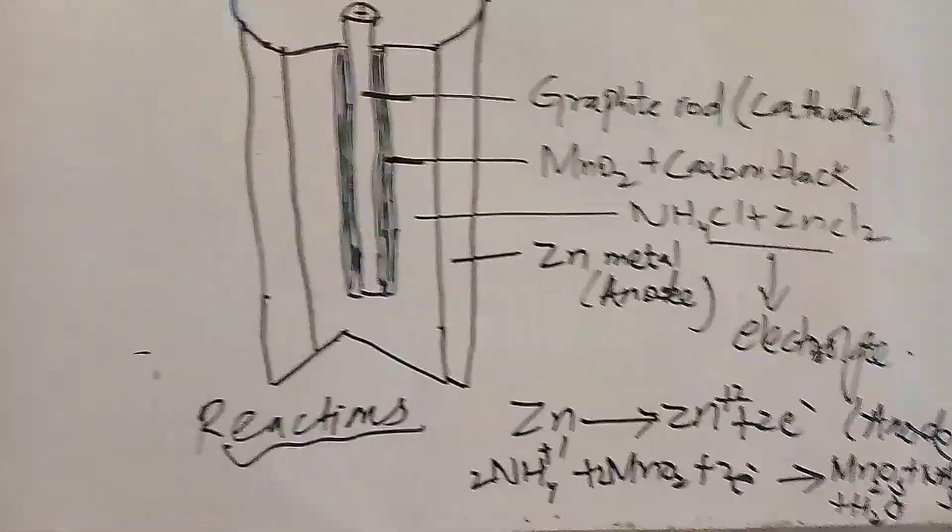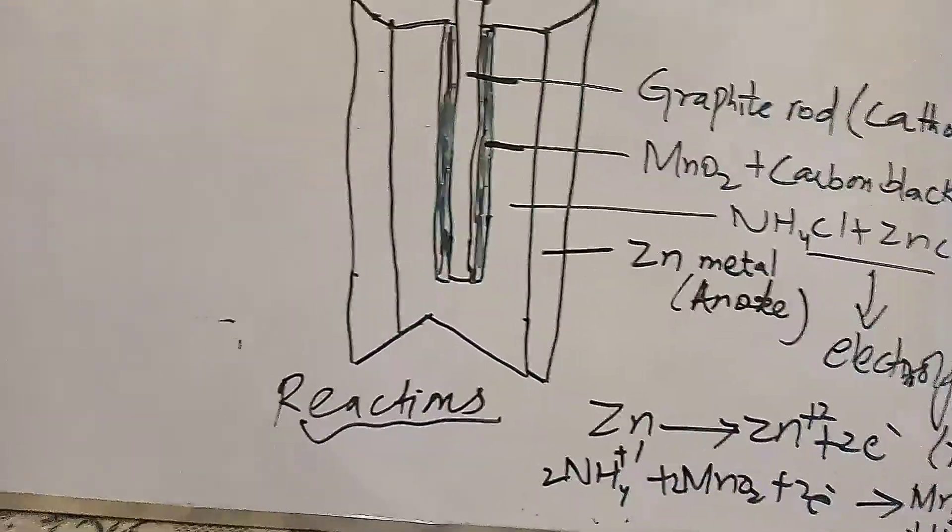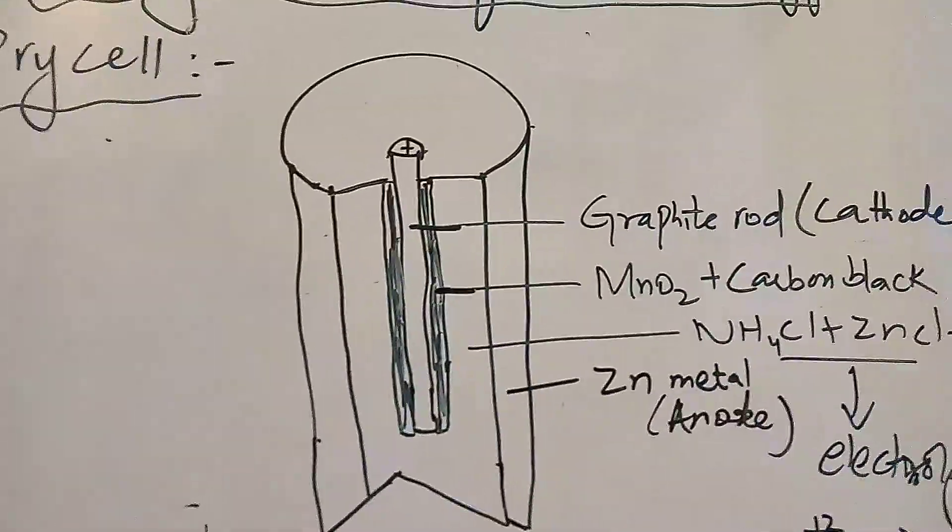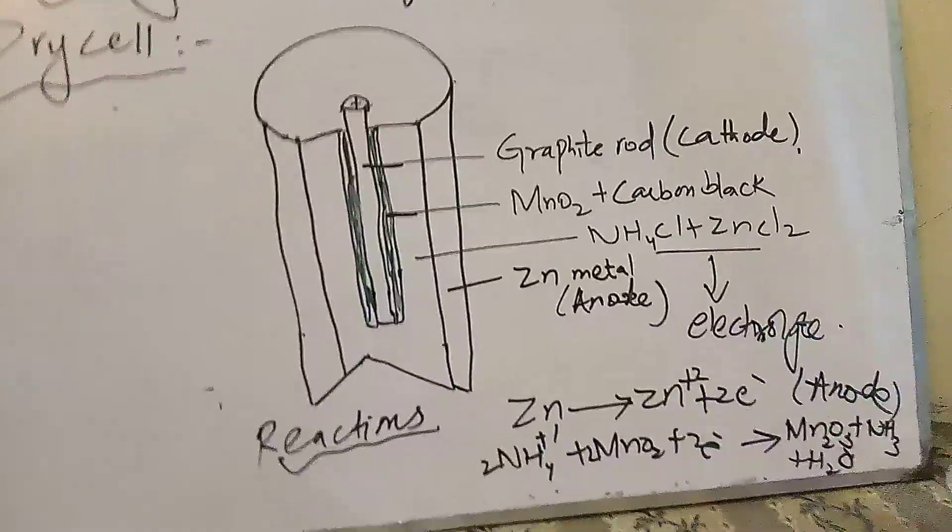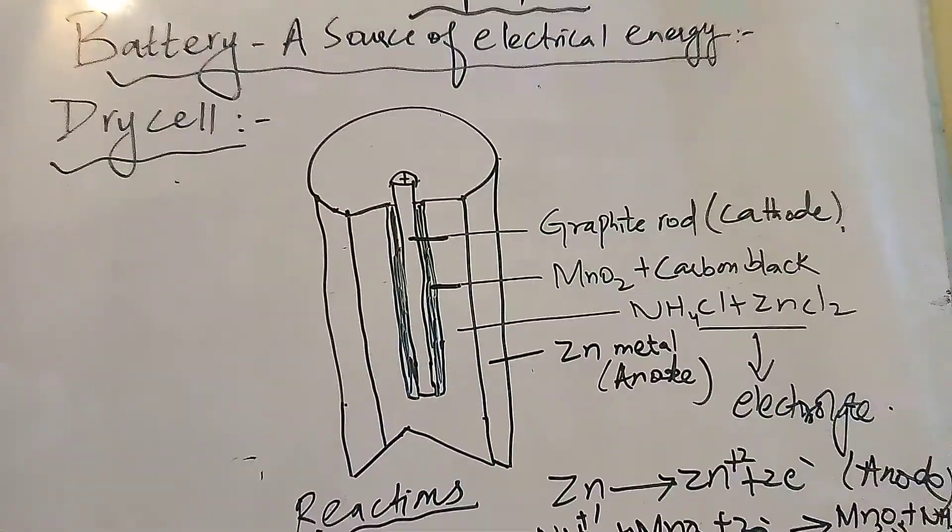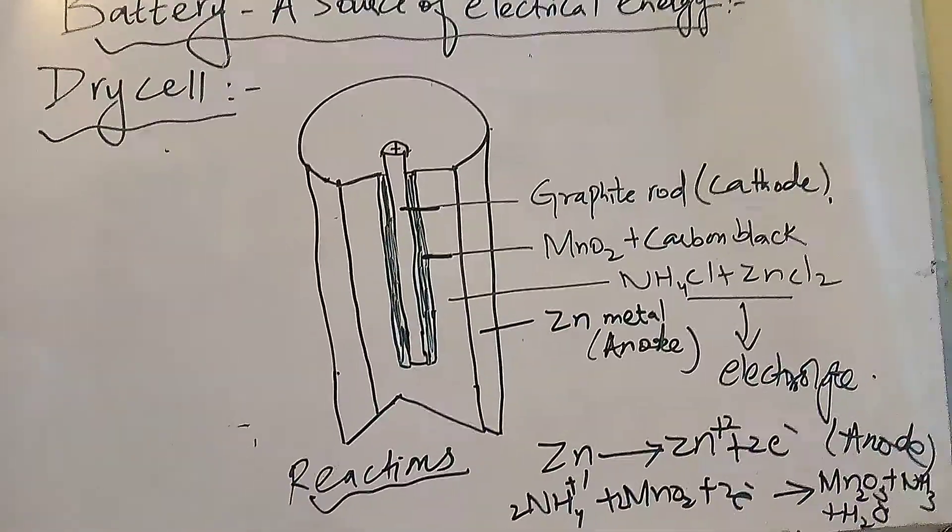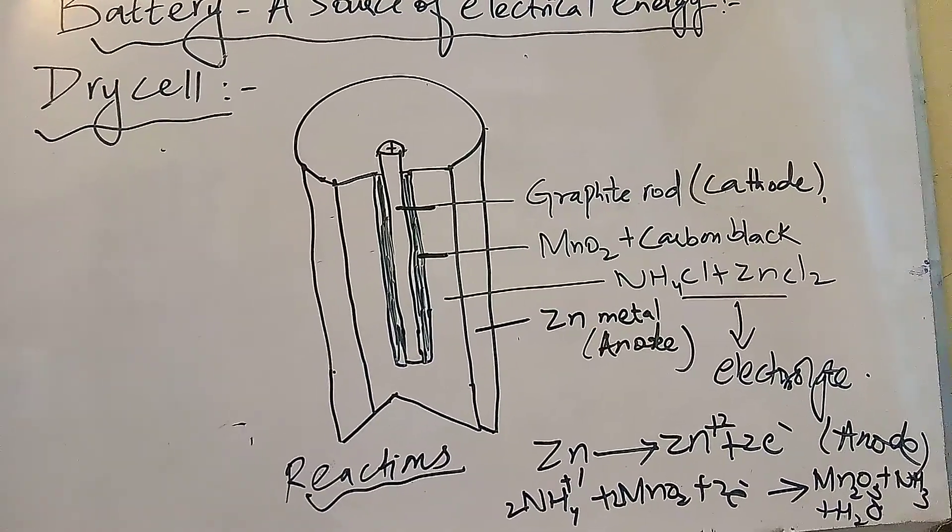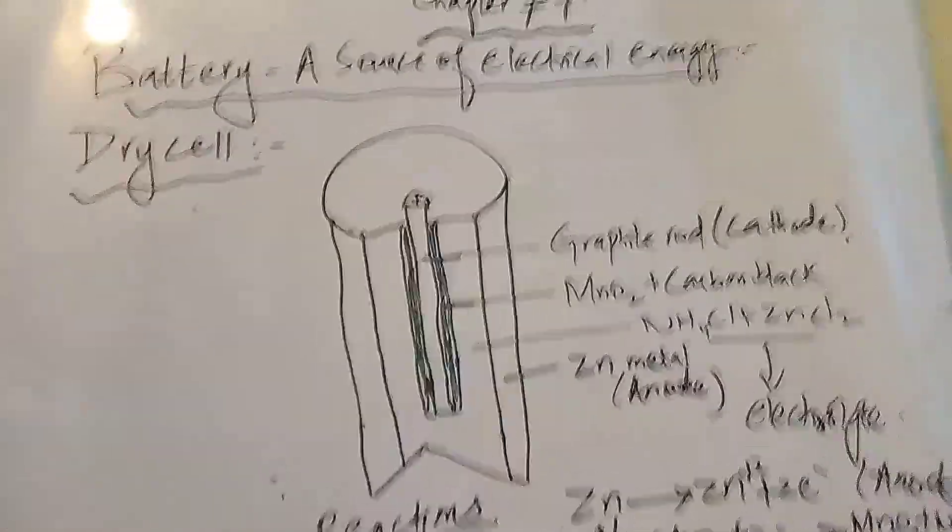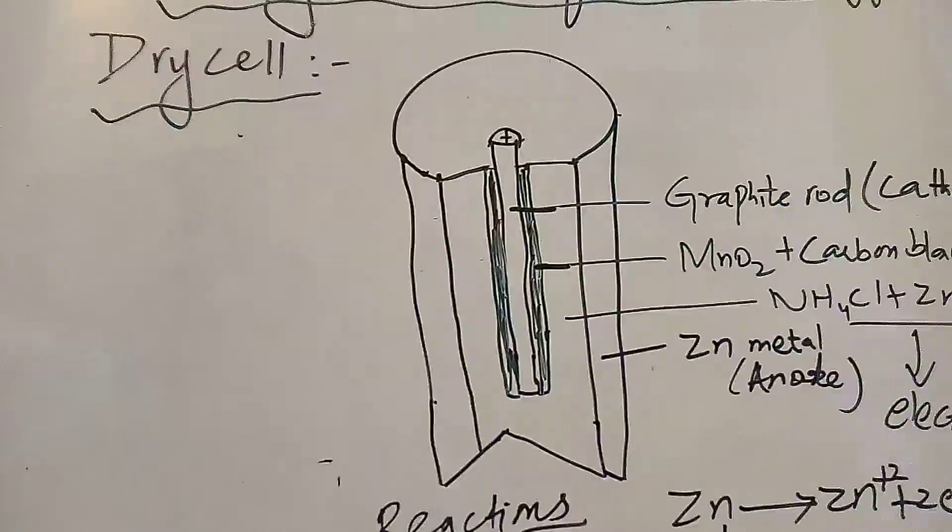These are very important. You have to learn this. This is the potential of 1.5 volt. Because in this we have anode and cathode, oxidation and reduction will take place.